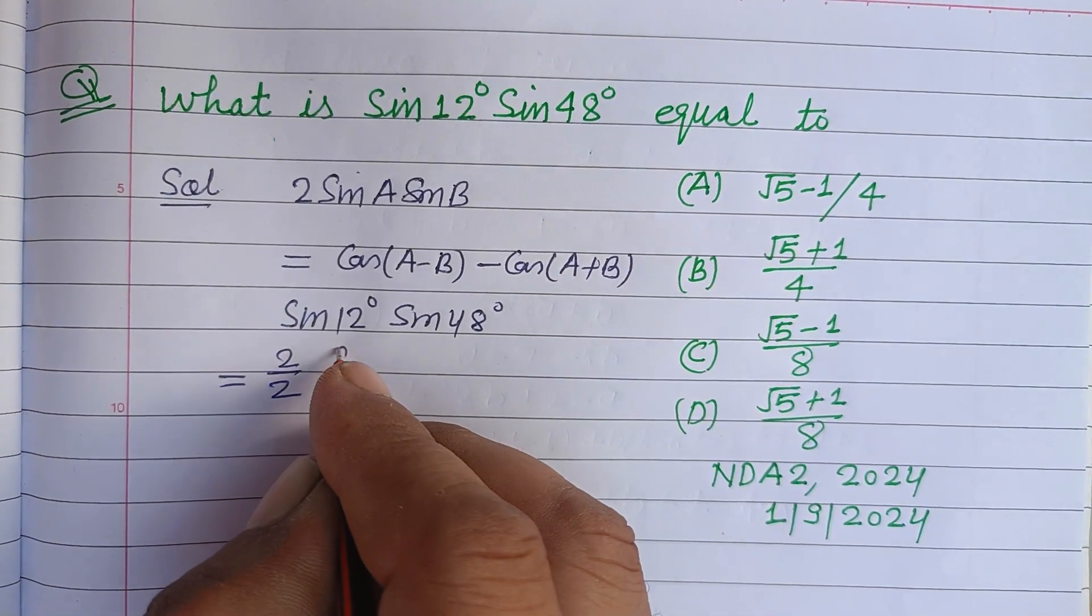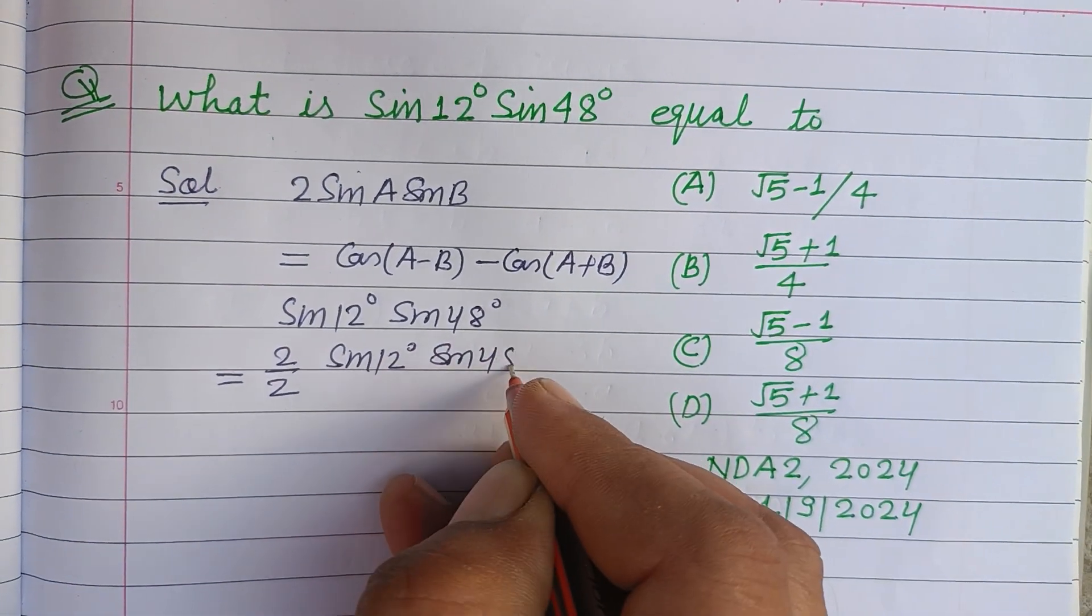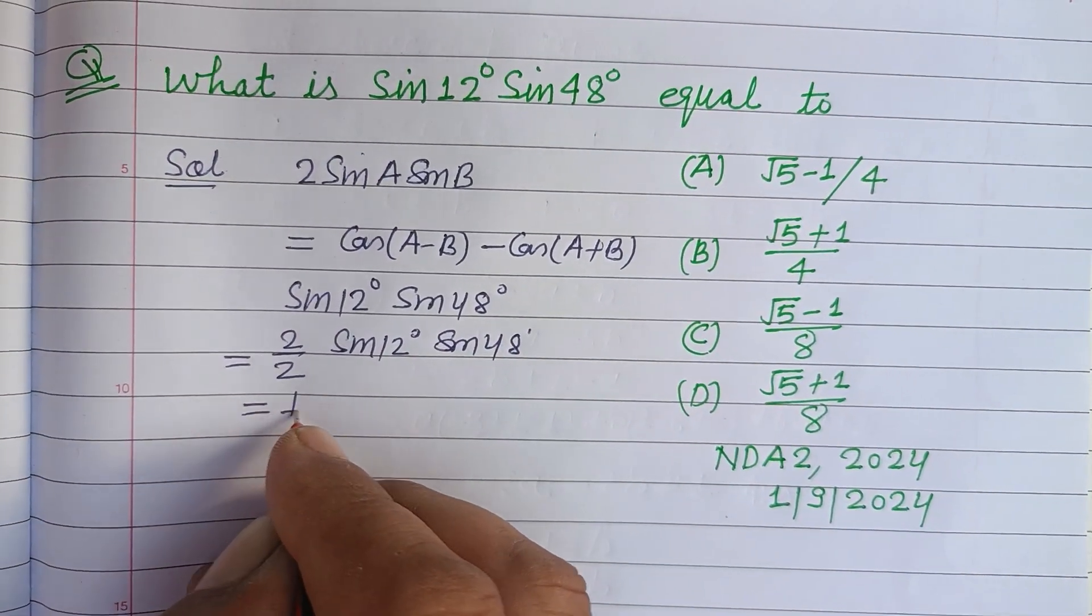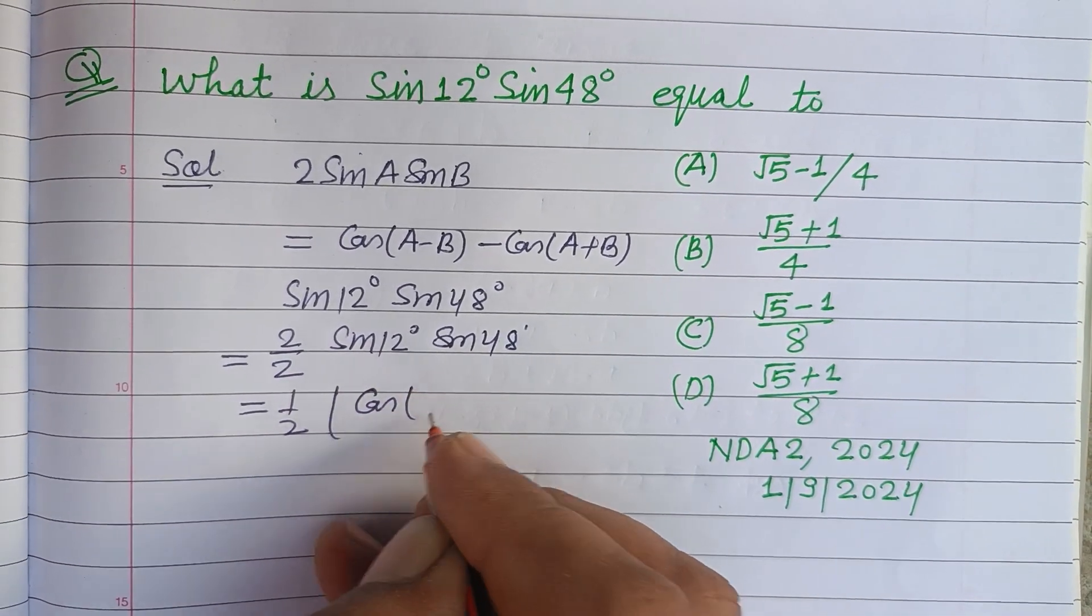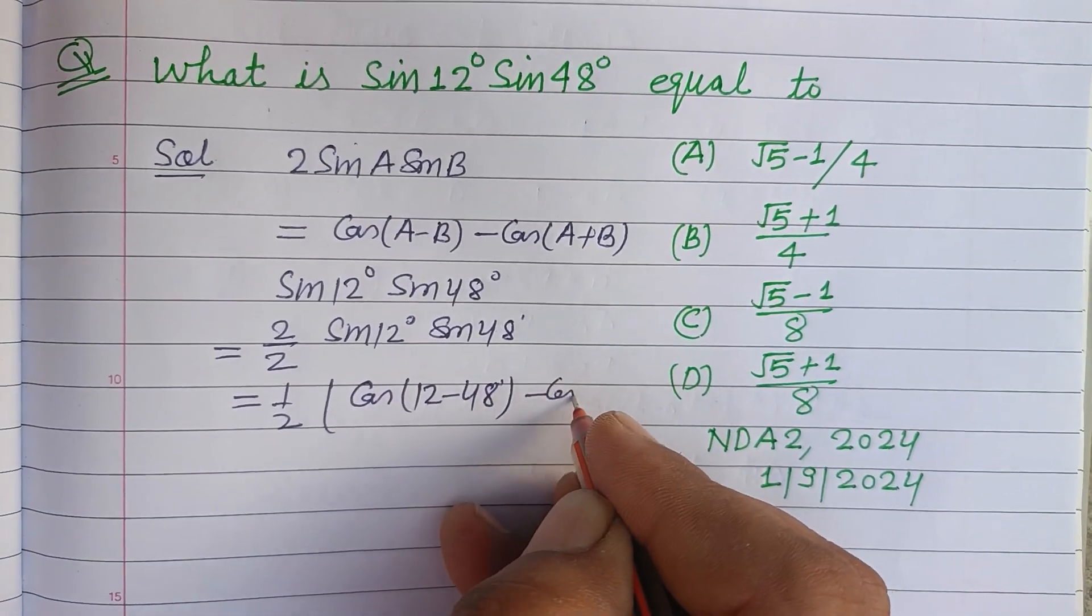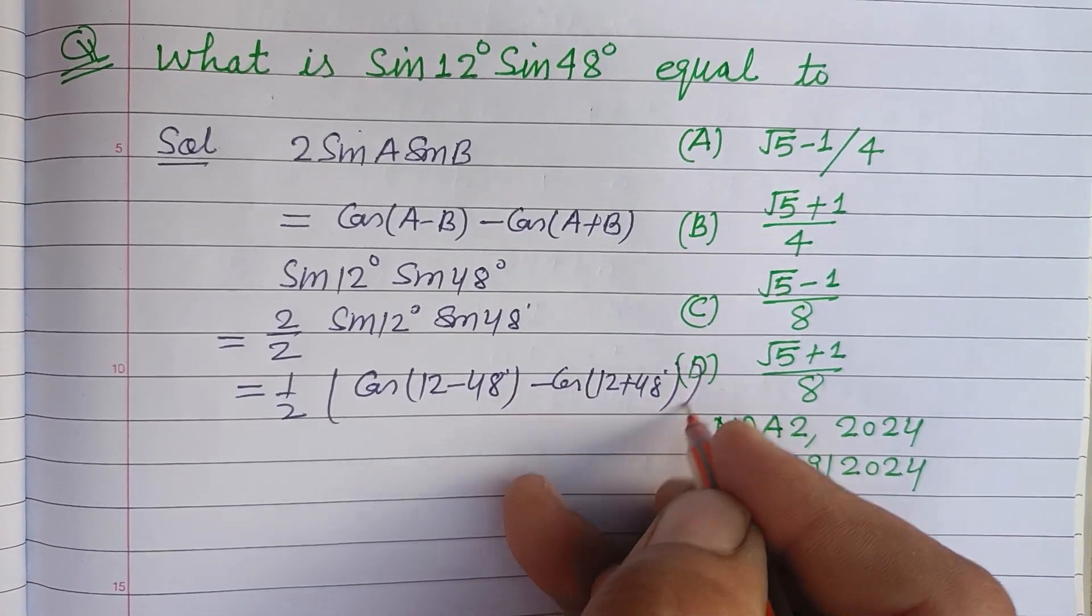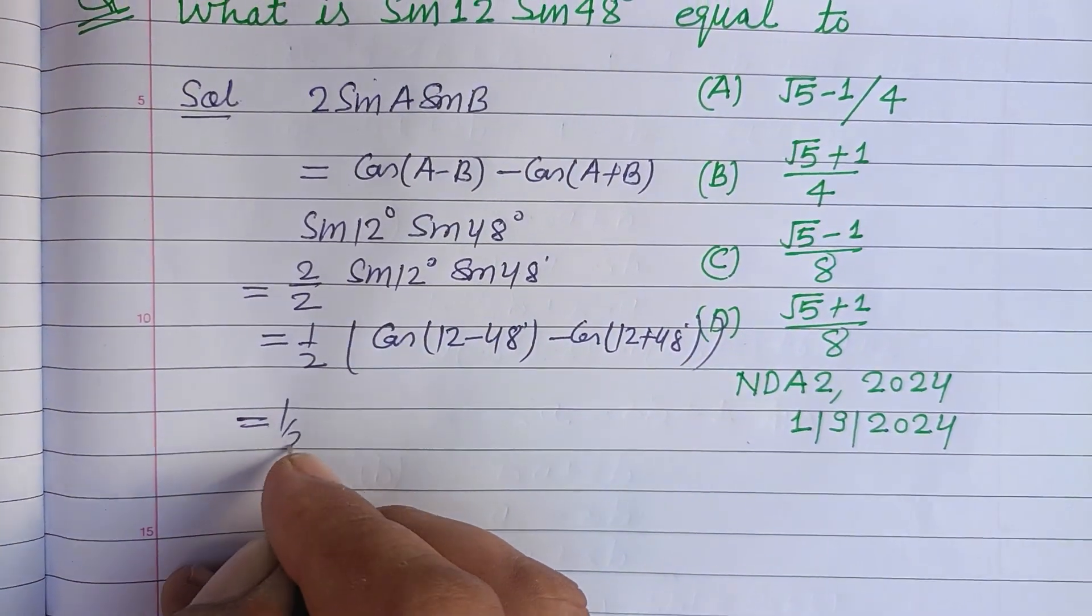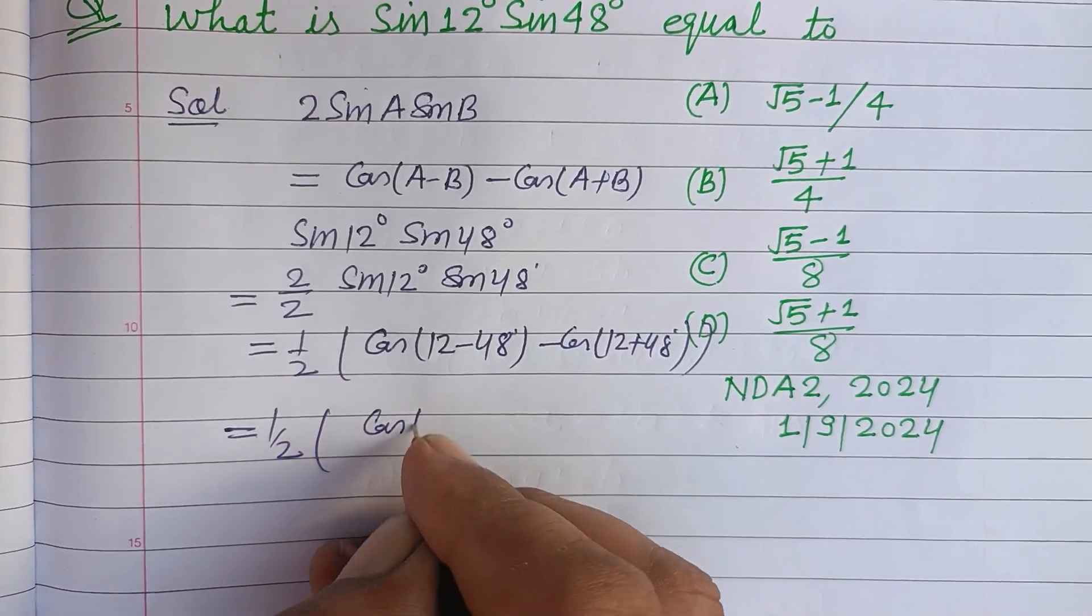So this is sin 12° sin 48°. Now this is 1/2 times 2 sin A sin B using cos(A - B) minus cos(A + B). Okay, so this is 1/2 cos(12 - 48), which is cos 36°